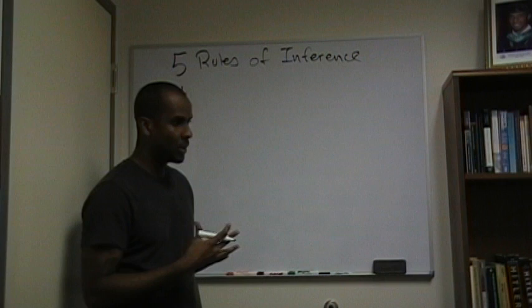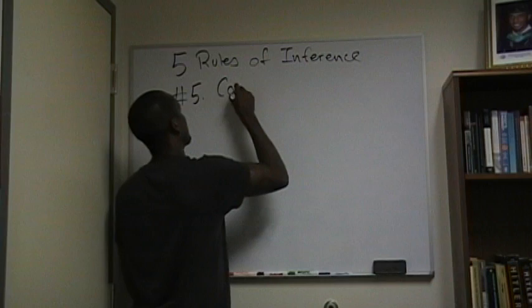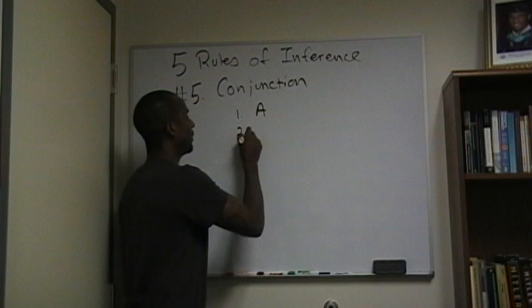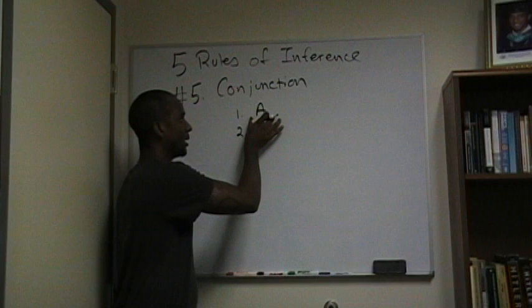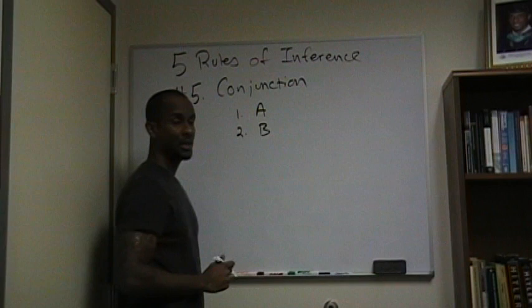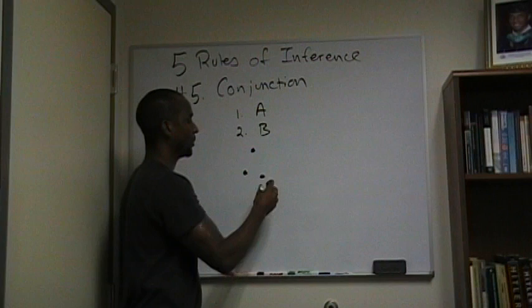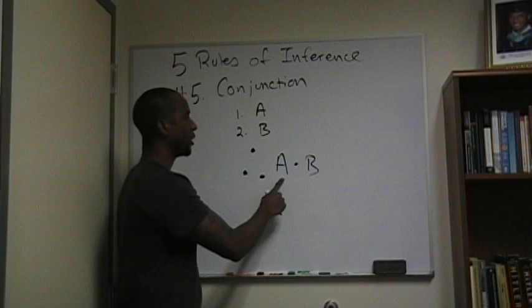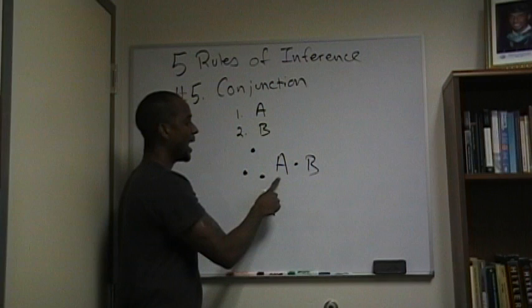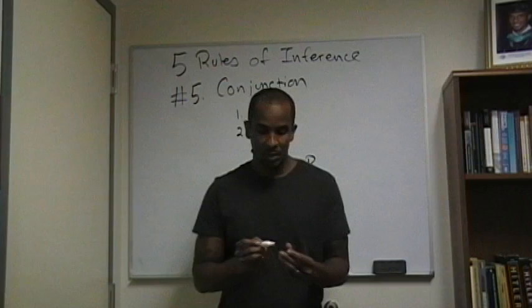The last example is one that helps quite a bit. It's very simple but very effective. Number five is conjunction. If premise one says A, and premise two says B — for example, I have gone to the store, and I have bought a gallon of milk — I can combine the two to say A and B: I have gone to the store and bought a gallon of milk. So that's conjunction.